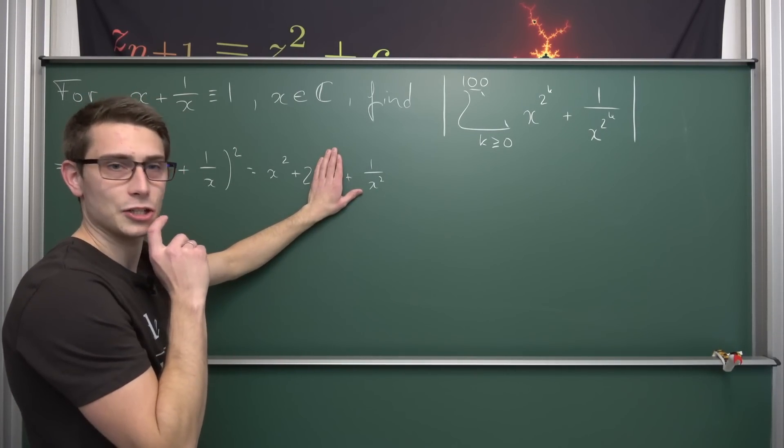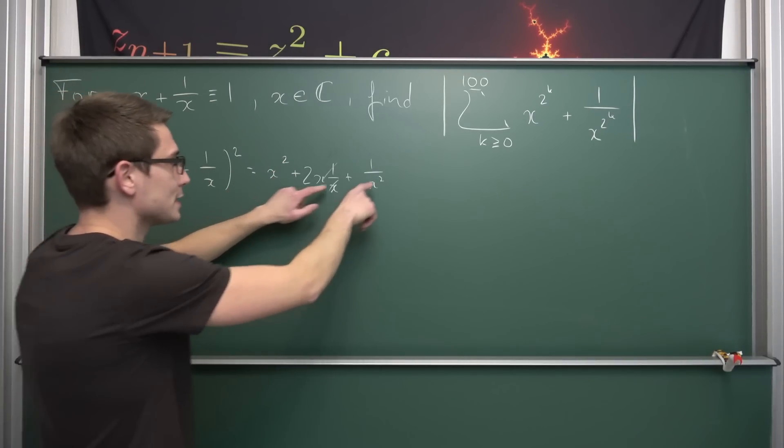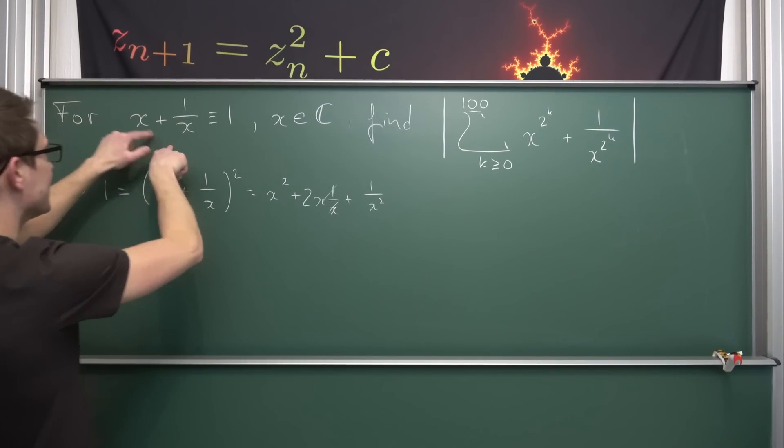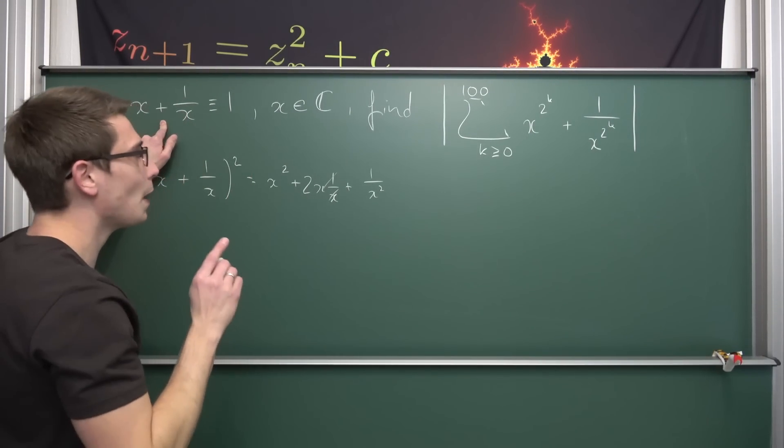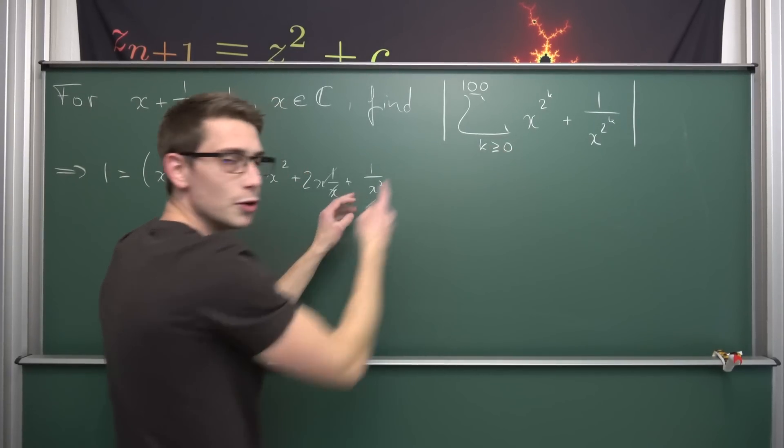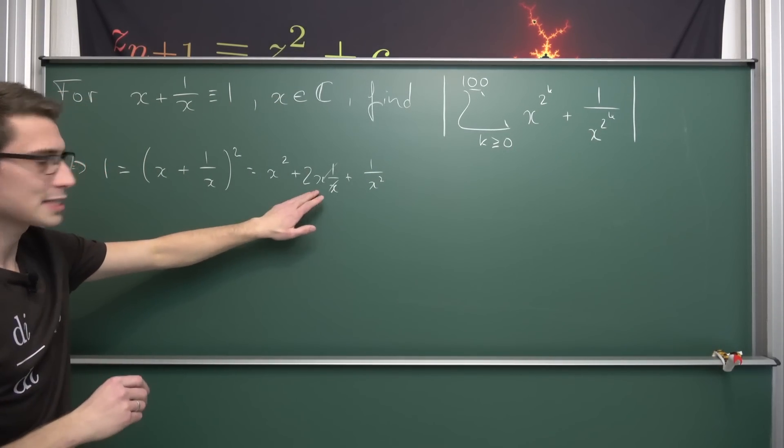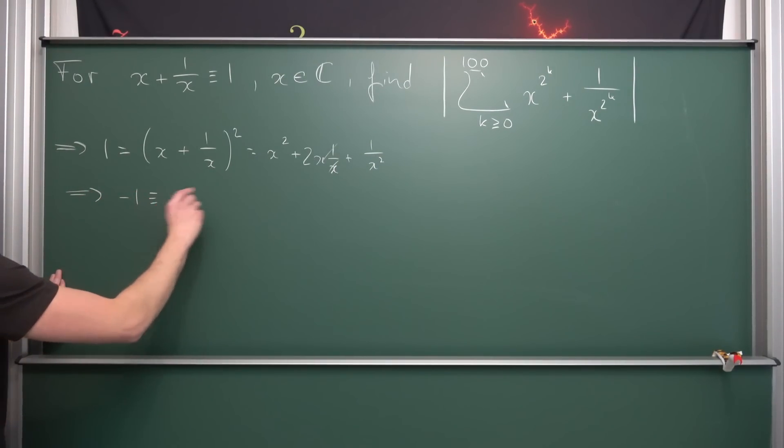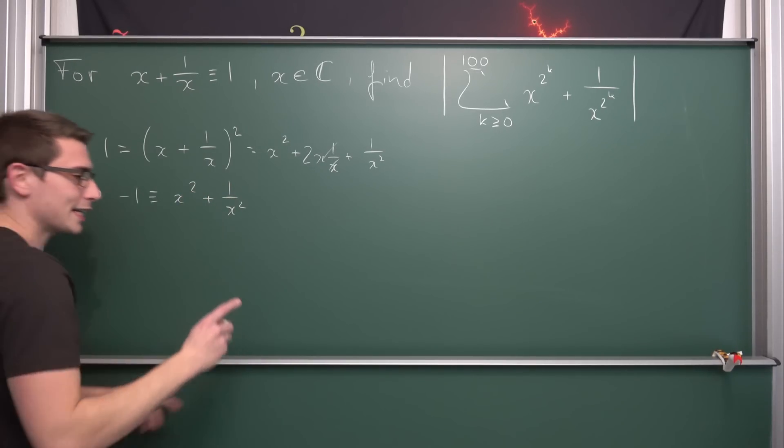Meaning we're left with x squared plus 2 plus 1 over x squared. This is good actually, because this is just x to the 2 to the first power and 1 over x to the 2 to the first power. On the 0th iteration we had x to the 2 to the 0th power plus 1 over x to the 2 to the 0th power. Meaning we already got the first two members of our summation right here. Now we can subtract 2 on both sides, leaving us with negative 1 being x squared plus 1 over x squared.